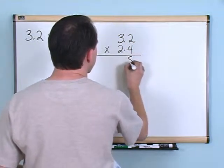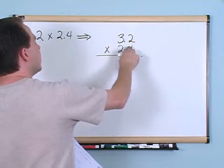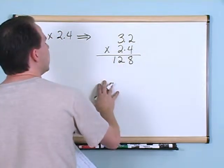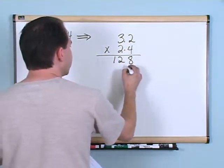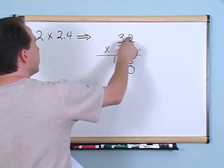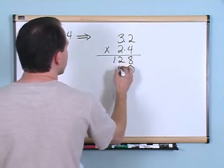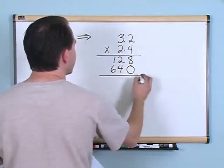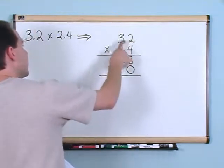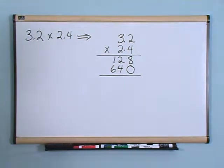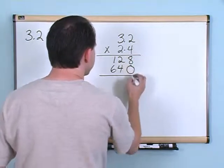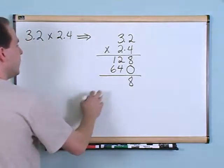Just don't even worry about the decimal until the end. So, how would we multiply if these decimals weren't here at all? You would say 4 times 2 gives you 8. 3 times 4 gives you 12. We're going to move over to the next digit so we have to put a 0 here. 2 times 2 gives us 4, and 2 times 3 gives us 6.